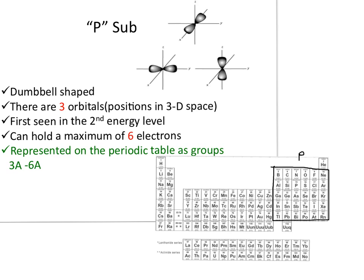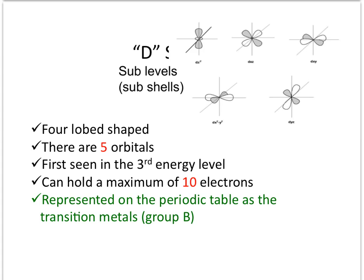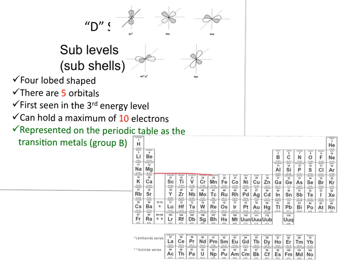The next are the D sub-levels. There are five orbitals in the D sub-level, each holding two electrons, giving a maximum of ten electrons. They are four-lobed in shape. On the periodic table, draw a box around the entire transition set of elements, which is the Group B elements.